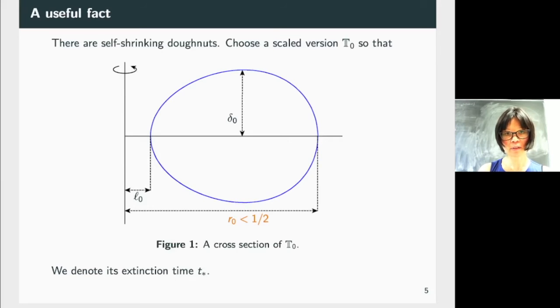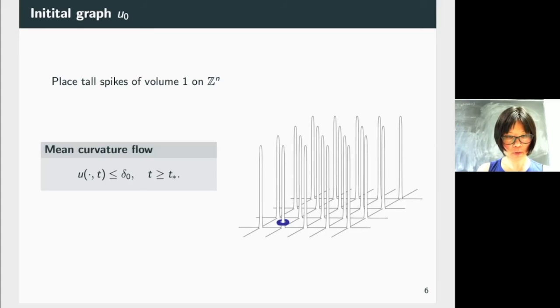So what about delta-naught? Delta-naught is the height, the thickness of the doughnut. And so because it was flat, you can put the thickness of the doughnut at height delta-naught. And when it becomes extinct, the point will sit at delta-naught. And so we have that the mean curvature flow is going to be, the solution of the mean curvature flow is going to be less or equal to delta-naught for T greater or equal than T-naught.